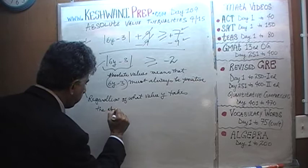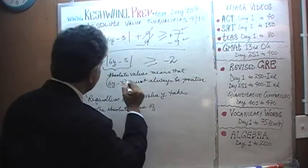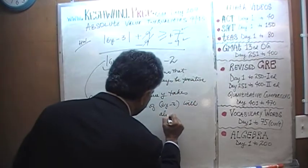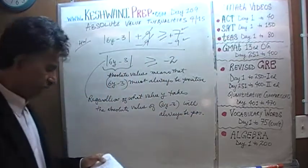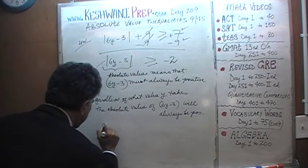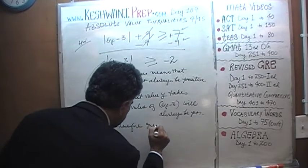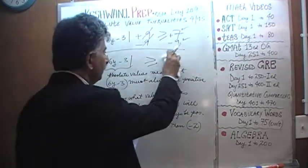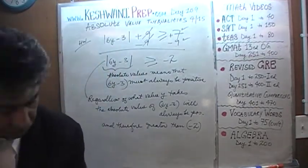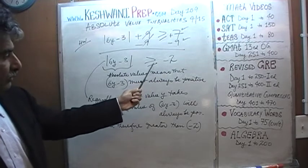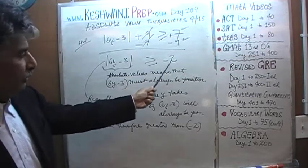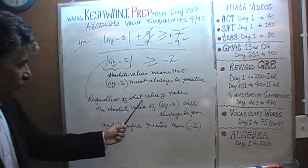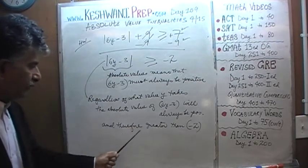The absolute value of the quantity 6Y minus 3 will always be positive. And therefore, the absolute value of 6Y minus 3 is going to be more than or equal to negative 2. It will always be more than negative 2 because this value always has to be positive. Therefore, regardless of what value Y takes, the absolute value of 6Y minus 3 will always be positive and therefore greater than negative 2.